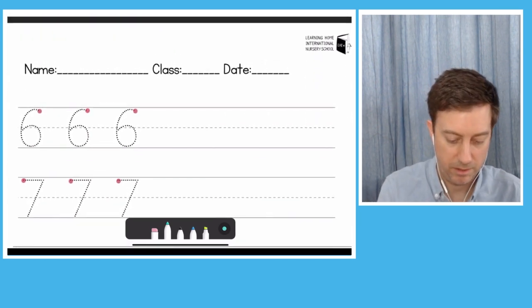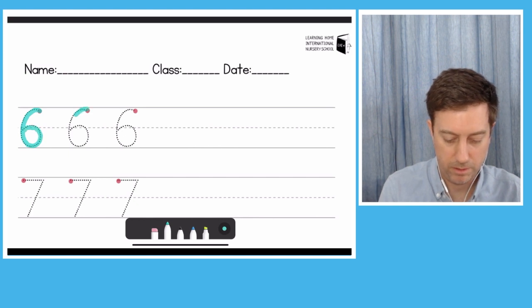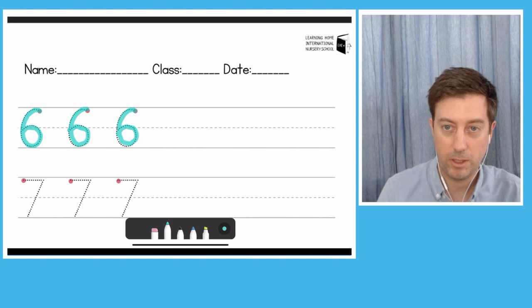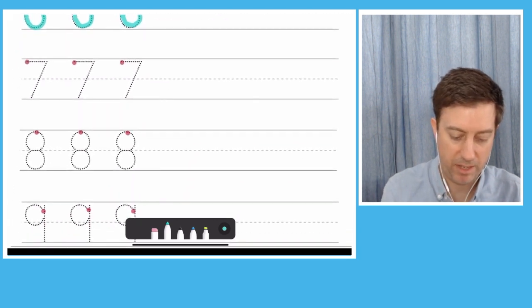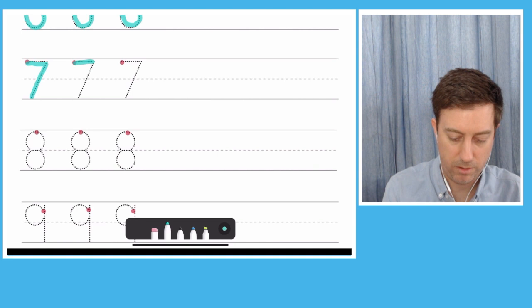Number six, starting at the top, going around, going around. Alright, simple. Seven, across, down. Across, down. Across, down.